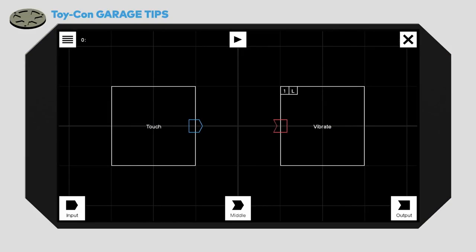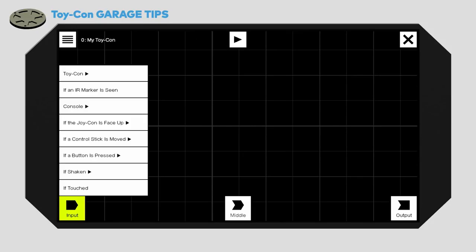The boxes labeled input and output are called nodes, which sounds way cooler, don't you think? Use input nodes to choose your form of input, such as button presses or control stick movements.